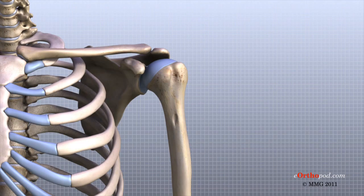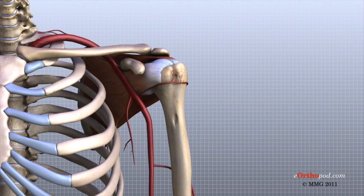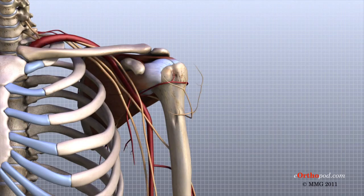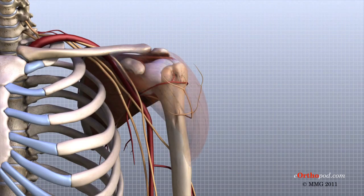Understanding the different parts of the shoulder can help you understand how the shoulder works, how it can be injured, and how challenging recovery can be when the shoulder is injured. The important structures of the shoulder can be divided into several categories.